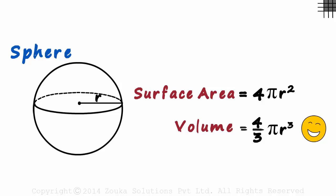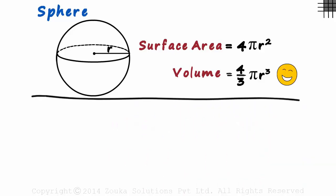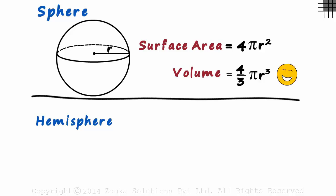If we know the formulae for a sphere, we can easily derive the formulae for a hemisphere too. And what is a hemisphere? A hemisphere is half a sphere.